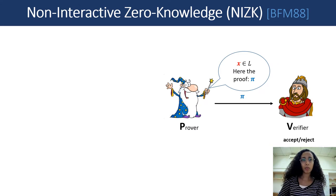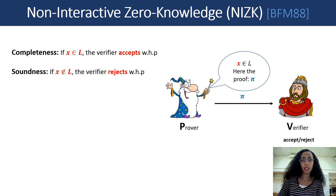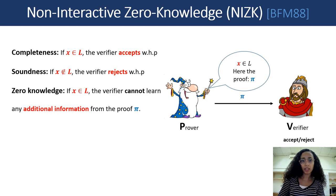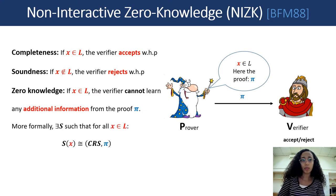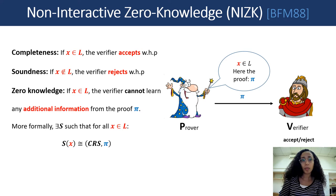The properties we require from such a proof system are as follows. The first property is completeness, which means that if the statement is true, then the verifier accepts with high probability. The last property, which is the special property, is zero-knowledge, which means that if the statement is true, the verifier cannot learn any additional information. We formalize it by requiring that there exists a simulator such that, upon receiving only the statement, the simulator can output the whole transcript — the CRS and the proof — everything the verifier can see during the proof.